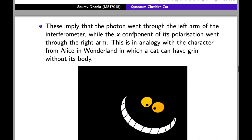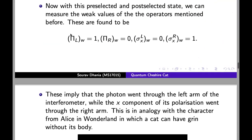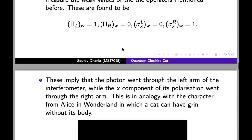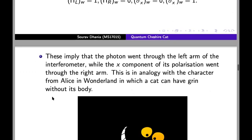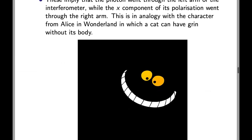This implies that the photon went through the left arm of the interferometer. As you can see that the position in the left arm is non-zero and in the right arm it's zero, while the x component of its polarization went through the right arm. This is an analogy with the character from Alice in Wonderland in which a cat can have grin without its body. This figure demonstrates that.